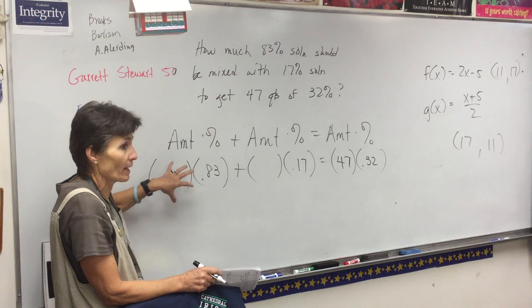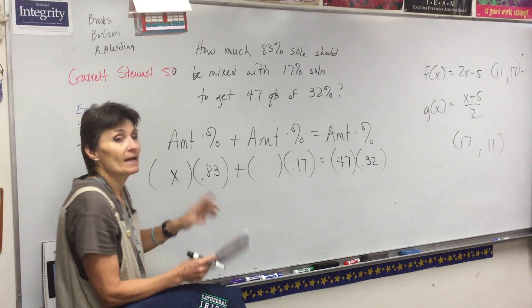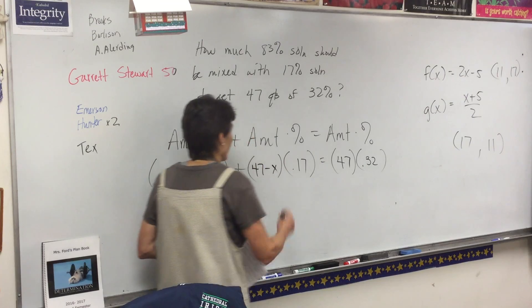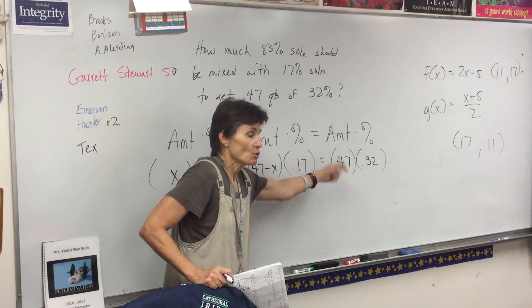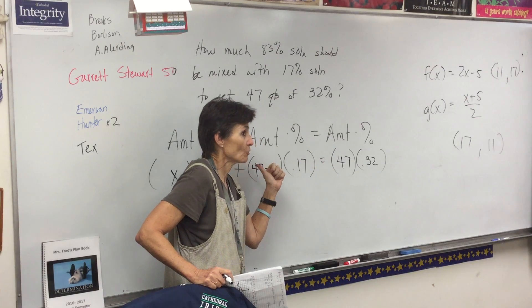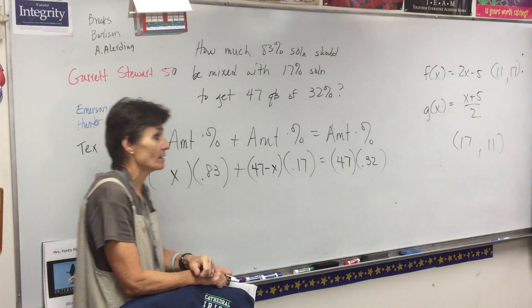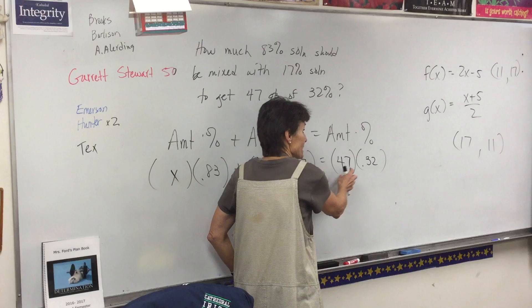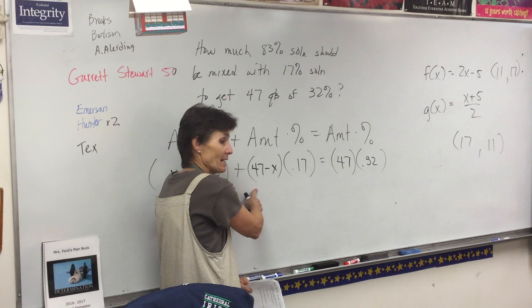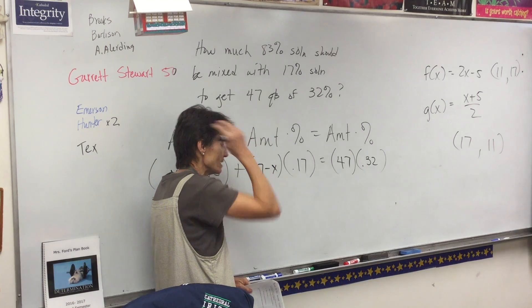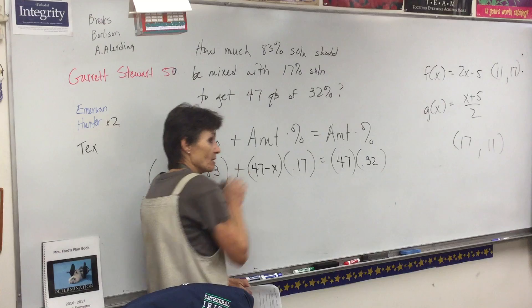The 47 goes over here this time, and this is still x because it still says how much, so that's still what I'm looking for. What I want to caution you about is these two add up to that one. If your empty space is here it's 47 plus x, but if it's here it's 47 minus x. Use your common sense, you add these to get that, so backing up that's going to be a subtraction.